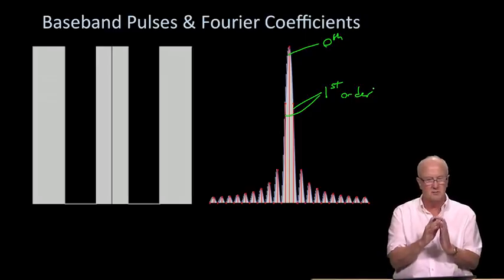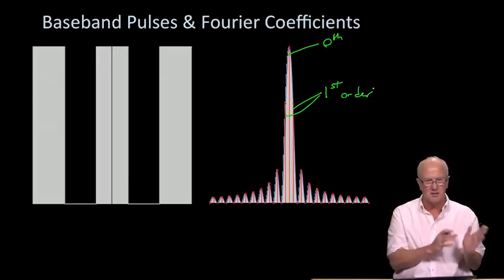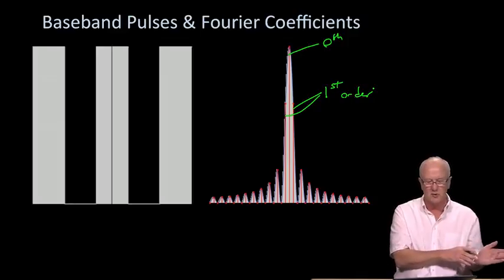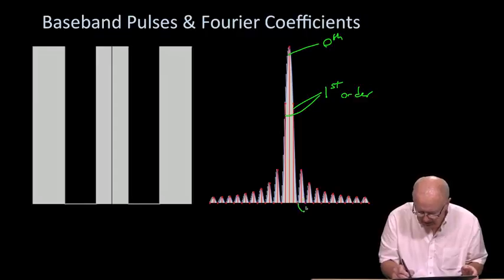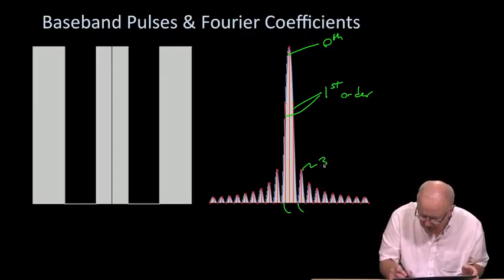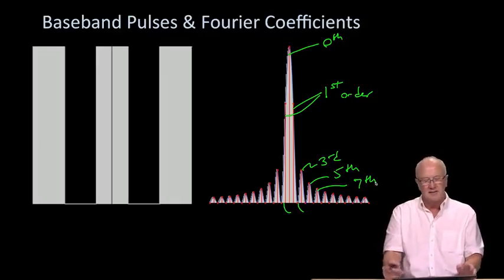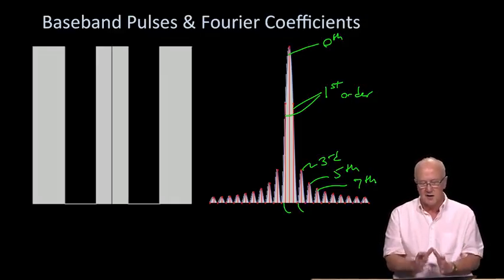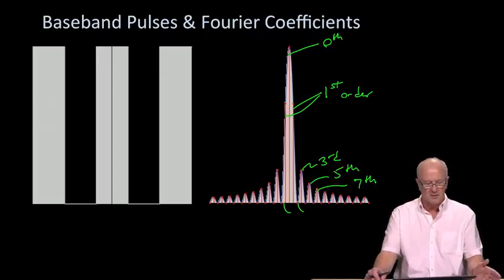We have first order terms, both at minus frequencies and positive frequencies, because we're using complex exponentials to rebuild that cosine that we needed one view graph ago. If we go up to second order, we recognize we don't need any, but third order is here, fifth order is here, seventh, and so forth. And it does have this nice property that as we go up in frequency, we find we're using less and less power to help reconstruct the pulse train.